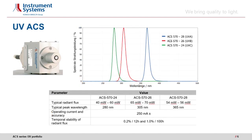Instrument Systems has developed three calibration standards in the ACS series for the three UV ranges A, B and C. The ACS 570-24 covers the UVC range; the typical radiant flux lies here between 40 and 60 mW, with peak wavelength at 280 nm. For the model ACS 570-26 for the UVB range, the typical peak wavelength lies at about 305 nm, and for the model ACS 570-28 in the UVA range, it is around 365 nm. The temporal stability of radiation is extremely good, at about 0.2% in 12 hours or about 1% in 100 hours.